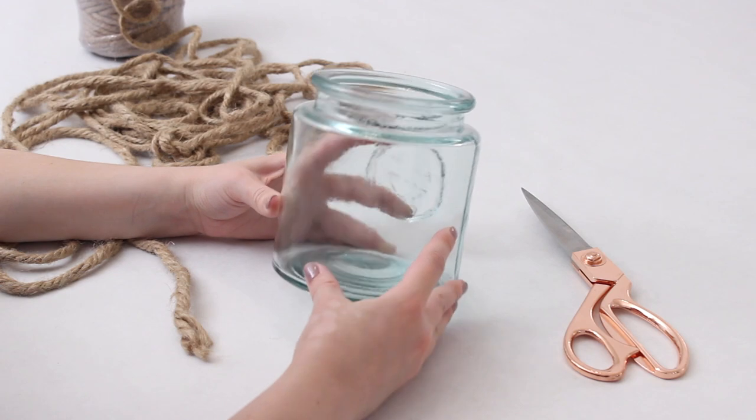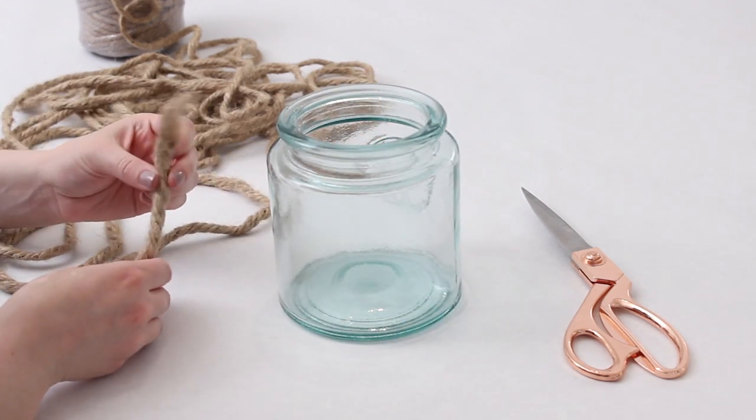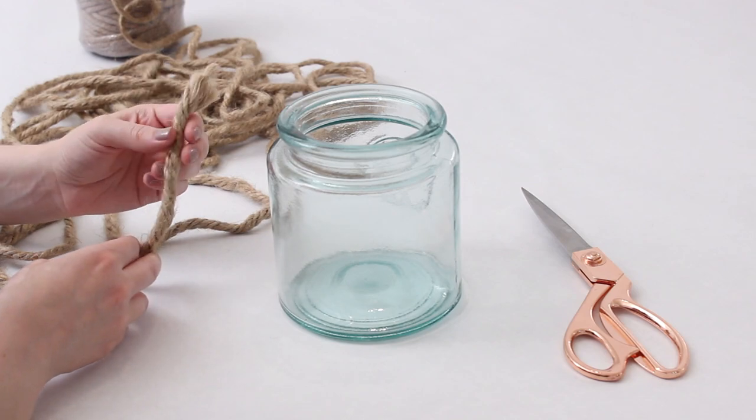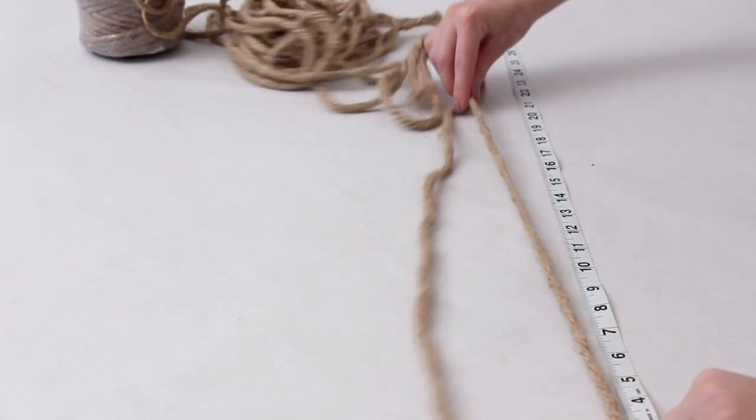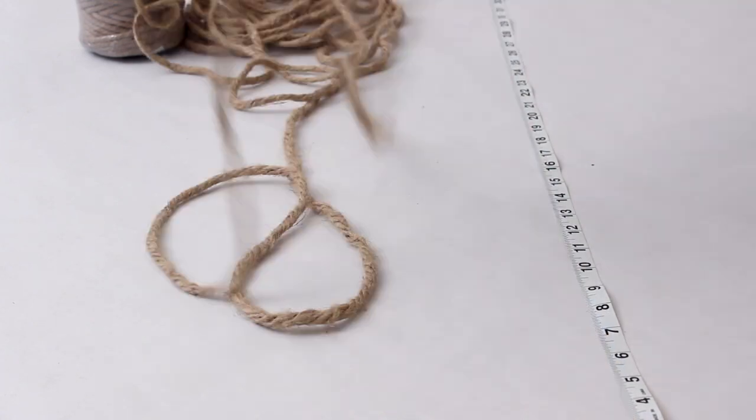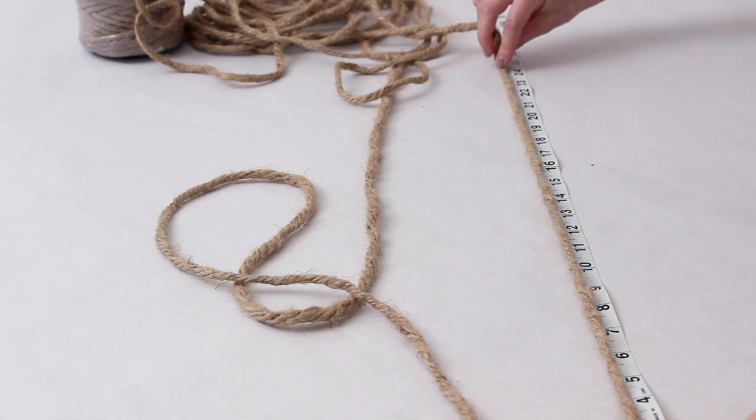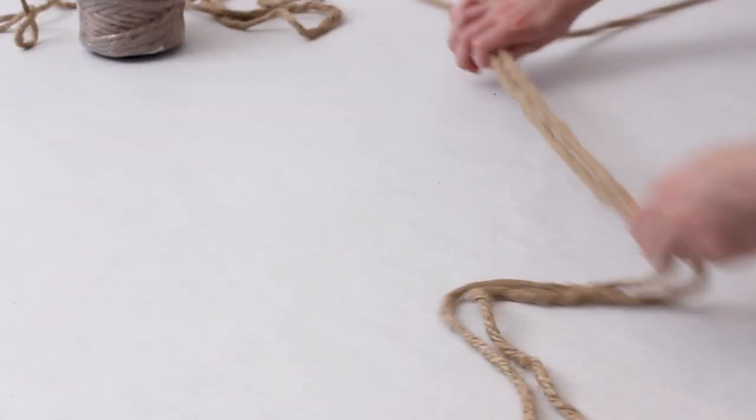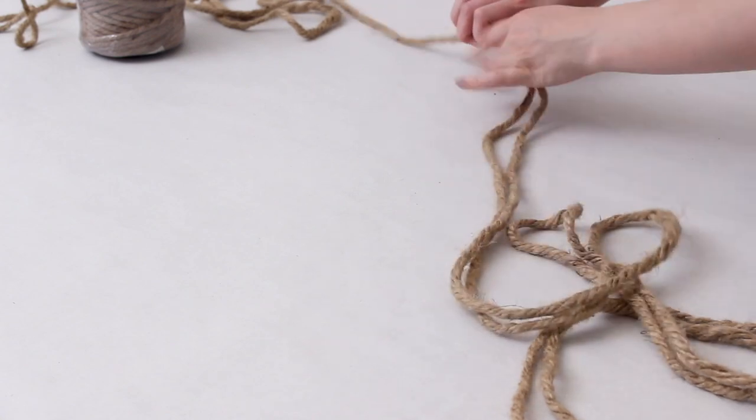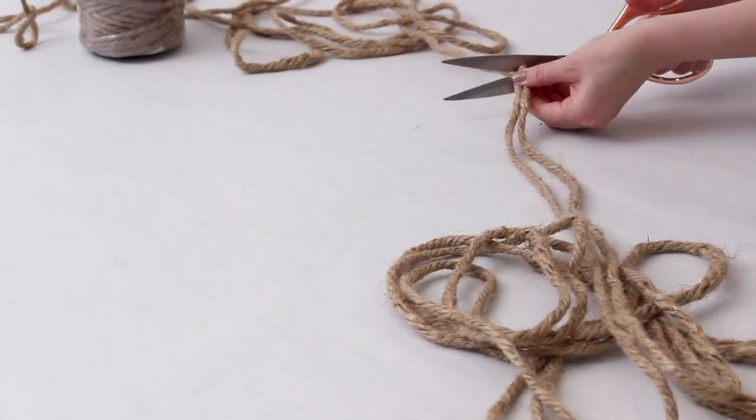For the first version you will need a glass jar or vase of any size and some rope or macrame cord. I'm using some larger size rope. What I did was pick an arbitrary number and I chose to use eight feet of this rope because I thought that would be plenty long enough so I measured that out and cut it and then I used that as a guide to cut out three more pieces of eight foot rope. So at the end I had four pieces of rope that were each eight feet long.